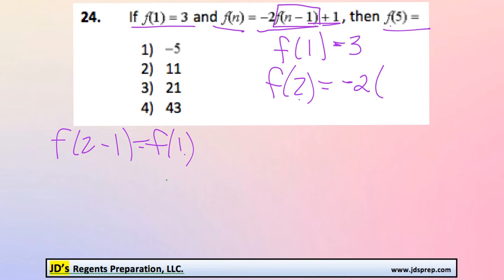So we're going to be multiplying it by the previous term, which is 3, and then plus 1. So this is -6 plus 1, which gets us -5.